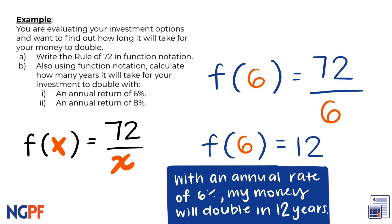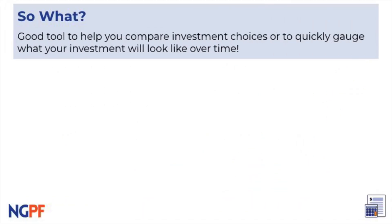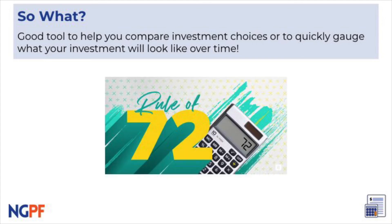Now go ahead and try the next question with an annual return of 8%. What is f(8)? Awesome! You will see that f(8) is equal to 9 years. So how can this be useful for you? You can use the Rule of 72 as a helpful tool in your back pocket to quickly compare and gauge your investment options given different rates of return.